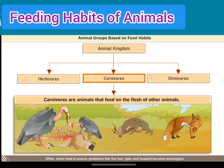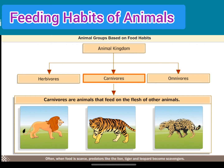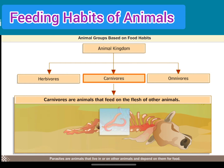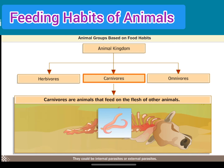Often, when food is scarce, predators like the lion, tiger and leopard become scavengers. Parasites are animals that live in or on other animals and depend on them for food. They could be internal parasites or external parasites.